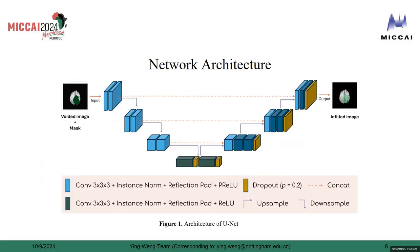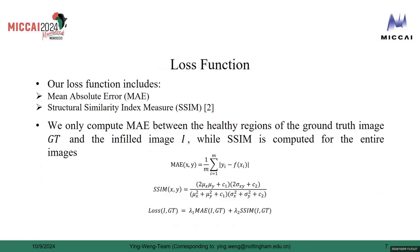Figure 1 illustrates our architecture of the U-Net. Our loss function includes two parts: one is MAE, the other is SSIM. We only compute MAE between the healthy region of the ground truth image and the infilled image, while SSIM is computed for the entire images.